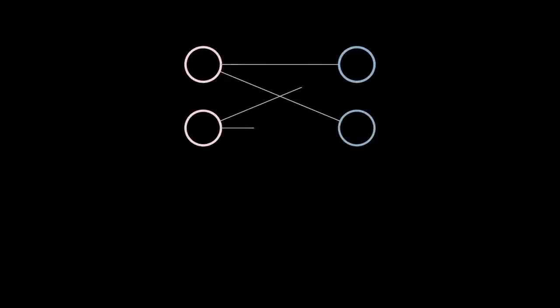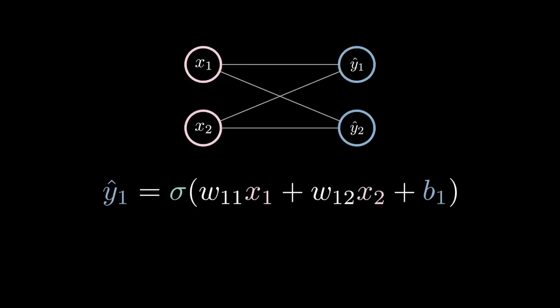To understand how neural networks work, let's look at a neural network with two inputs and two outputs. Let's focus on the first output neuron. While we know the value of this neuron is going to be this equation, where sigma is the activation function.